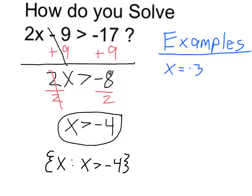Then I get 2 times negative 3 minus 9, so that's negative 6 minus 9, which is equal to negative 15, and negative 15 is greater than negative 17. So we can see why that is true.